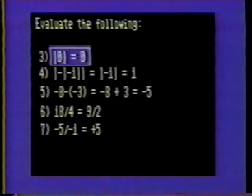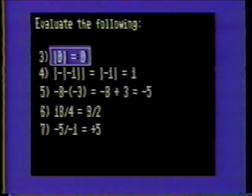Evaluate the following items. Number three: the absolute value of zero is zero.